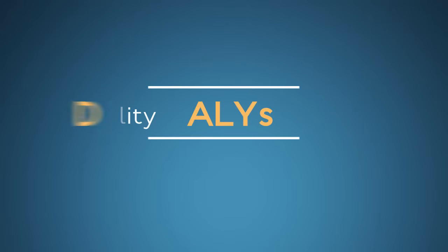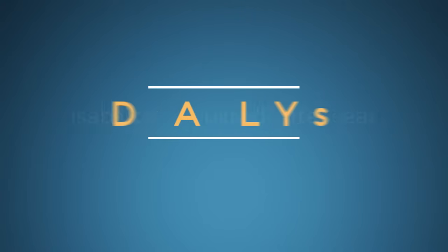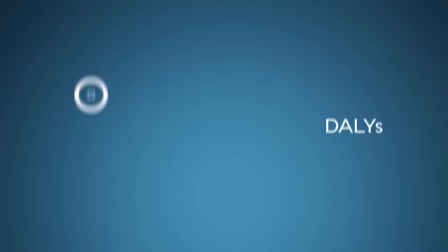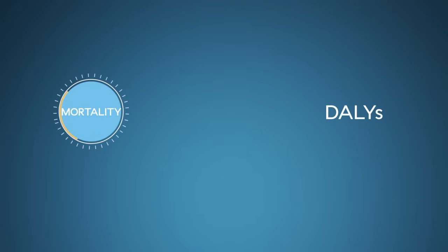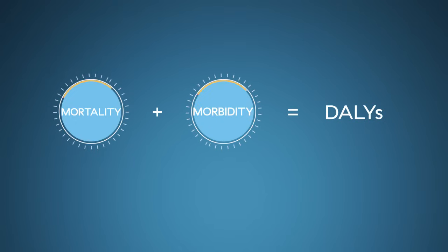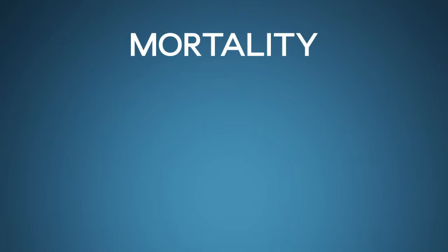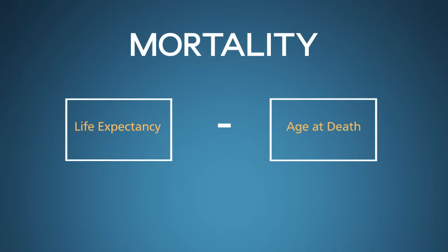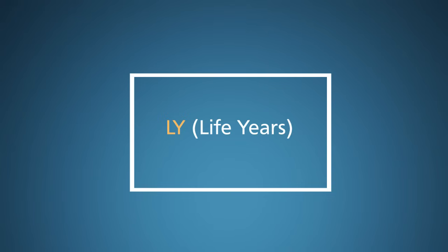DALY stands for Disability Adjusted Life Years. Simply put, a DALY is a standardized quantitative measure of the burden of disease. It combines mortality — the years of life lost due to premature death — with morbidity, a measure of all non-fatal clinical effects such as illness episodes or chronic disability. Mortality is easy to quantify: it's simply the life expectancy of a healthy individual at the time he or she becomes ill, minus the age at death of an individual with the disease being studied. Think of this as the LY in DALY, or life years lost due to disease.